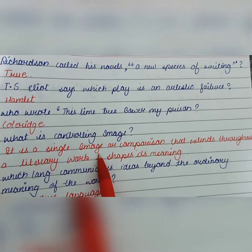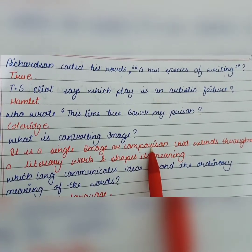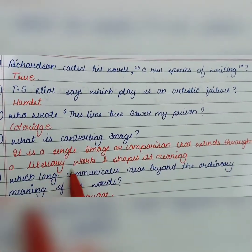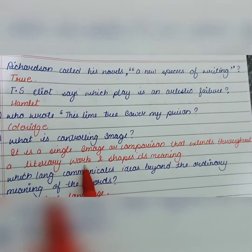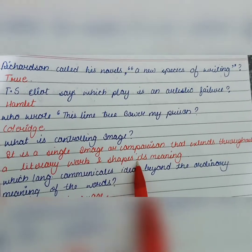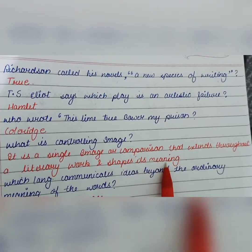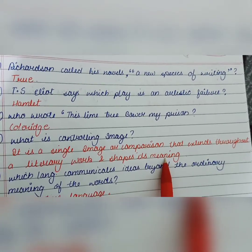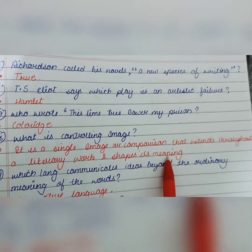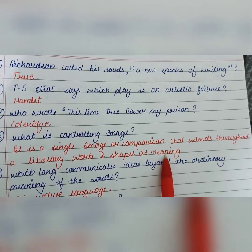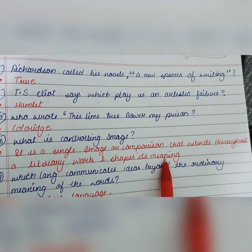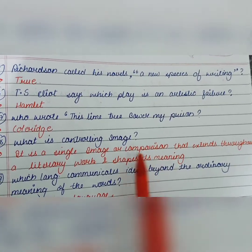What is a controlling image? It is a single image or comparison that extends throughout a literary work. It is used in a work so that it handles the meaning of the entire work — it shapes its meaning. A writer introduces one image that controls the meaning of the entire novel or literary work.